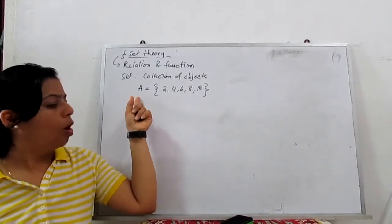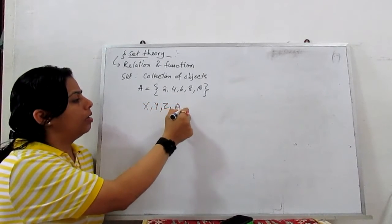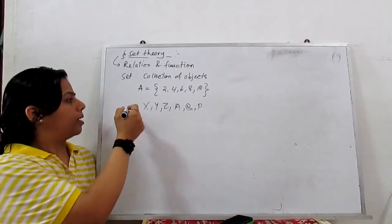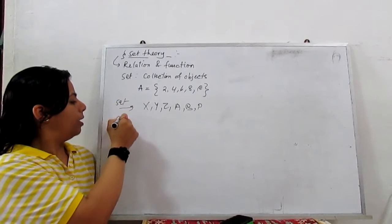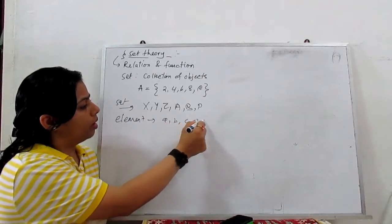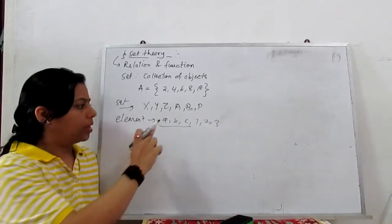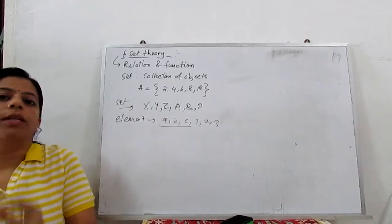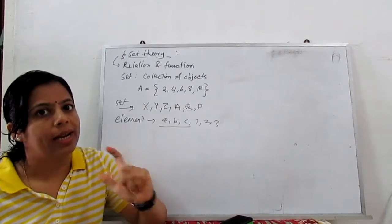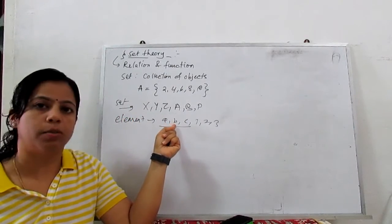Set notation is always given by capital letters like X, Y, Z, A, B, P, Q — all the big alphabets. This is set notation. Elements are given by a, b, c, 1, 2, 3. So if we use alphabets for elements, we always write them in small letter case. For big letter case — set notation uses big letters, and element notation uses small letter case. Always elements are written in small case.